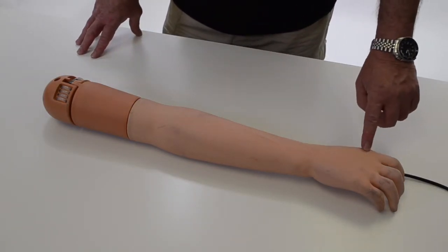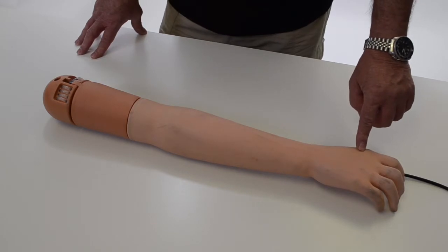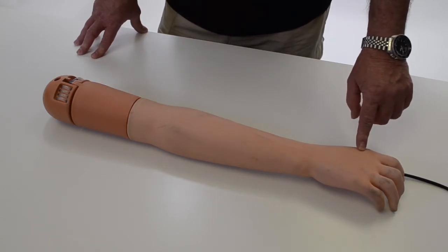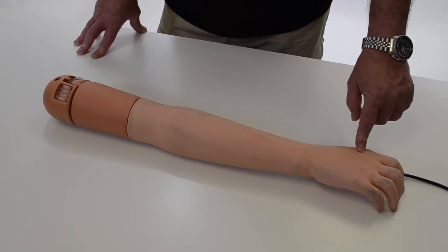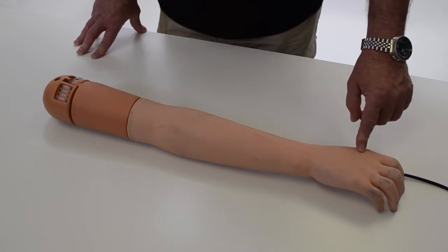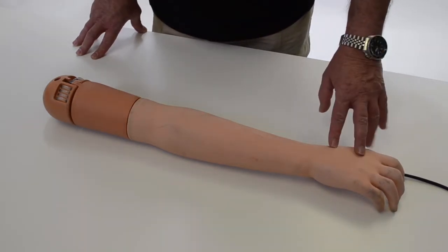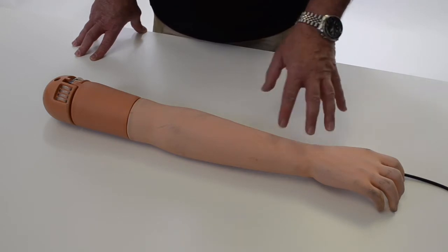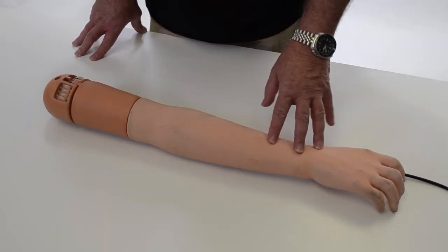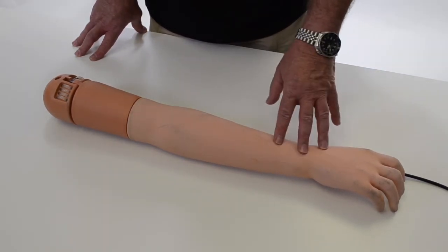With a syringe and a needle, insert and bleed off the air until you get all the air out, and then this arm is ready to be used. Maximum size gauge needles and IV would be 20 gauge.